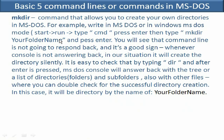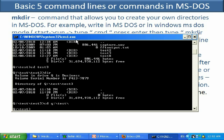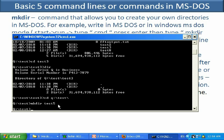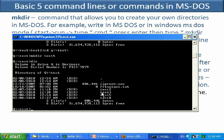Now let's discuss how to create a new directory using the MKDIR command. In the test folder, I want to create a new folder called 'test5'. I type MKDIR followed by a space and the folder name — MKDIR test5 — and press Enter. Nothing appears on screen, which actually means the folder was created successfully. To verify, type DIR and you'll see test5 listed in the folder structure.